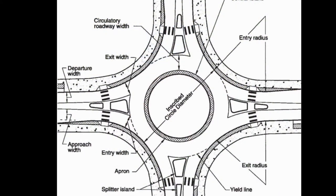As you can see, this is a basic geometry diagram showing the elements included in a roundabout. There are many measurements to take into account when designing for the parameters, such as exit and entry radius, the width of both the exit and entry lanes, the departure of approach lanes, and the width of the circulatory roadway.